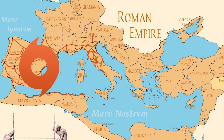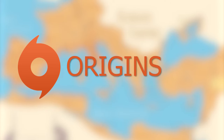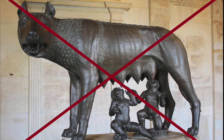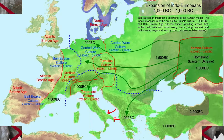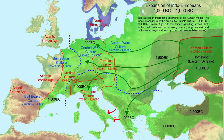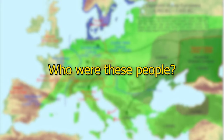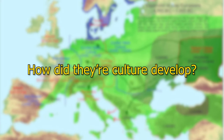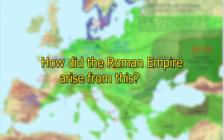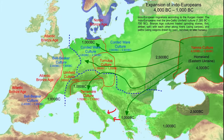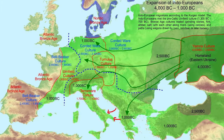In this series we will talk about the origins of the Roman Empire and the Italics, but we don't start as usual with Romulus and Remus. We want to look further back when the first migrants reached what is now Italy. Who were these people? Where did they come from? How did their culture develop? And how did the Roman Empire arise from this? We will answer all of these questions throughout the series.